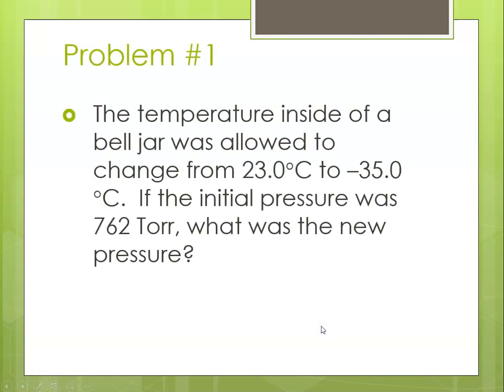Problem 1. The temperature inside of a bell jar was allowed to change from 23 degrees C to negative 35 degrees C. If the initial pressure was 762 torr, what was the new pressure? So this is a Gay-Lussac's Law problem. Volume is constant, and temperature is changing, and we are going to see what happens to pressure.